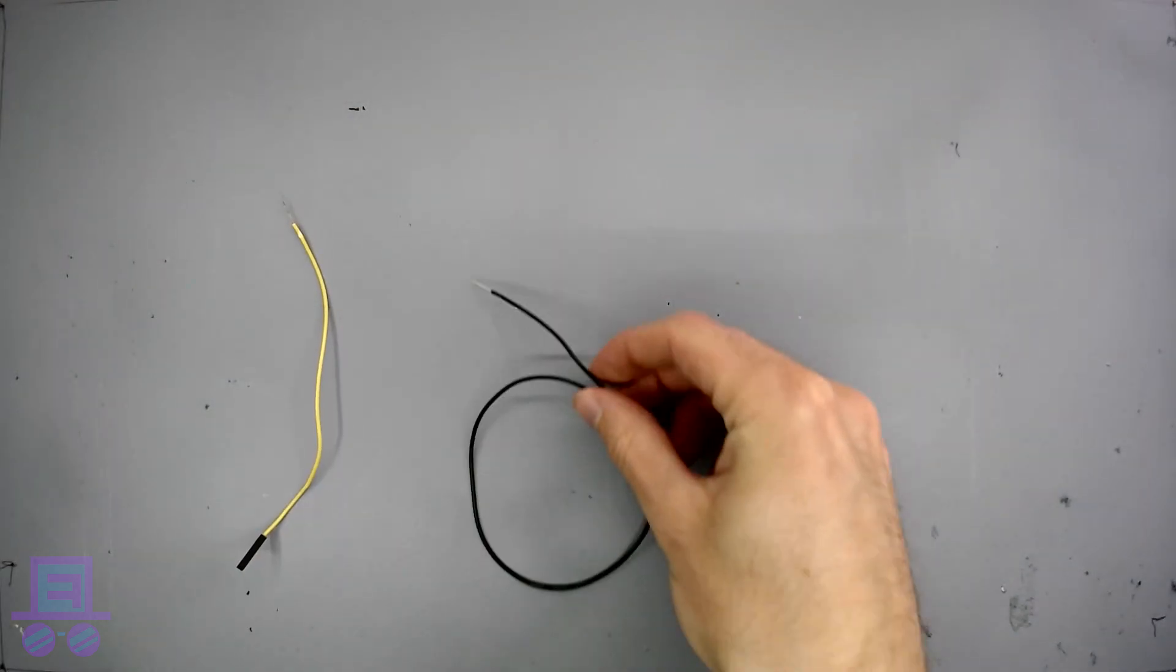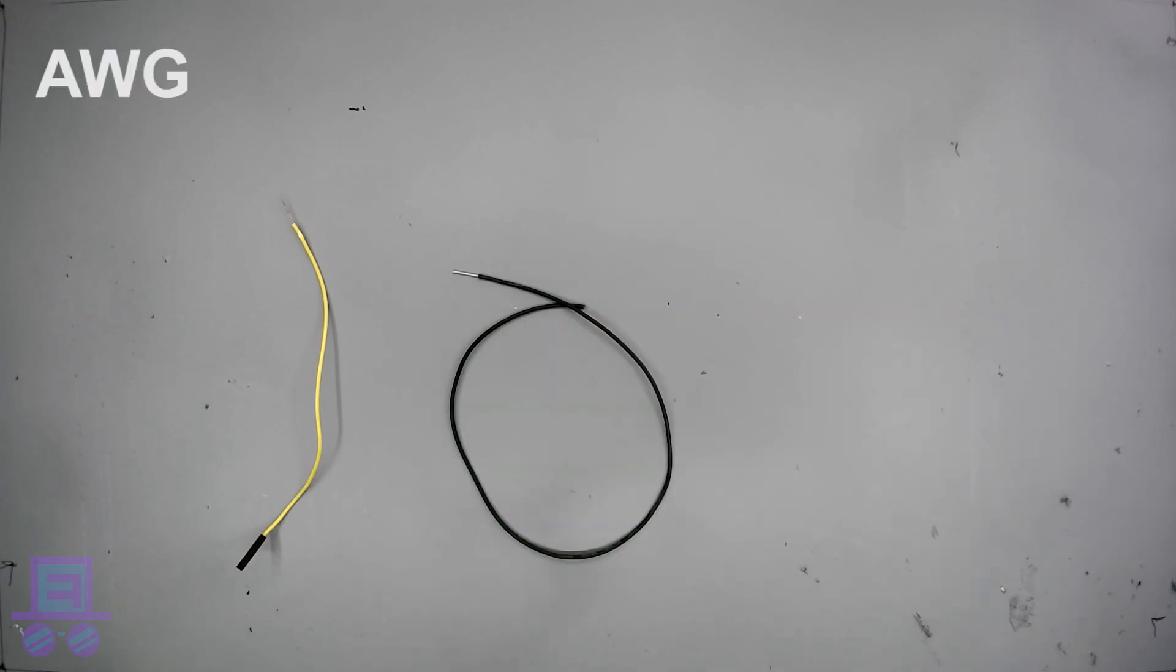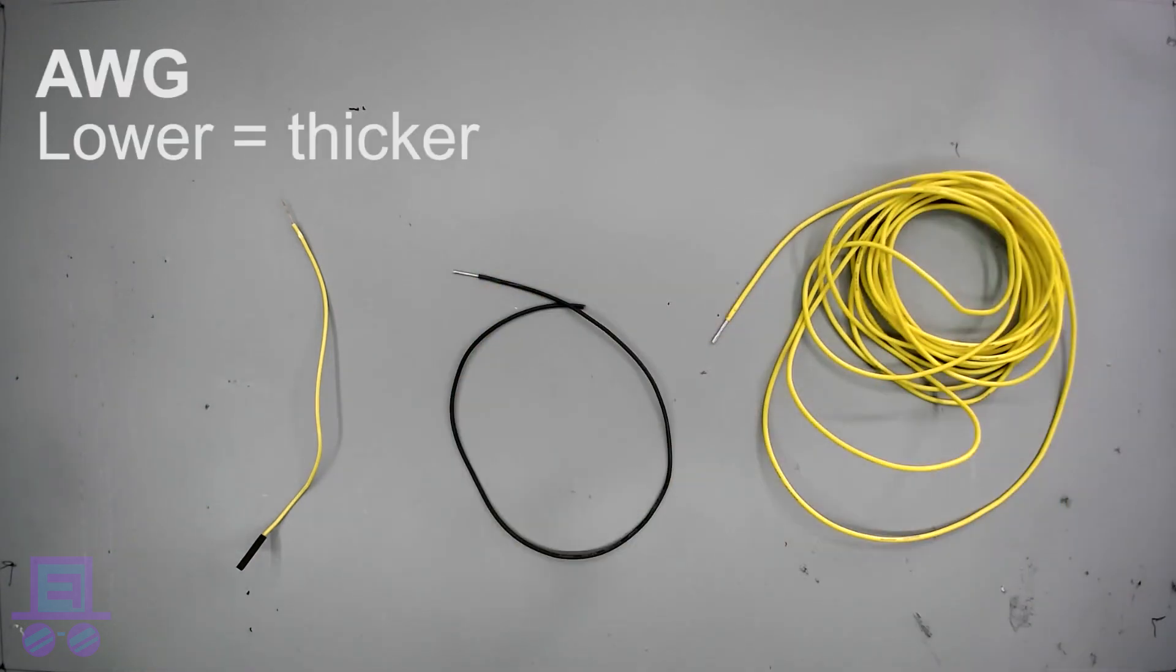Now up until this point, we've just been guessing when it comes to wire. However, now is an excellent time to brush up on what we should be doing. Apart from the insulation, the main thing we need to keep in mind is its thickness. This is measured in AWG. The lower the AWG, the thicker the wire.